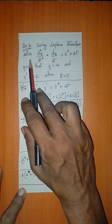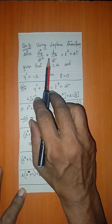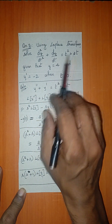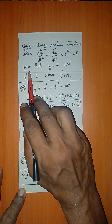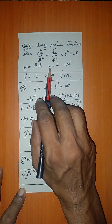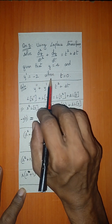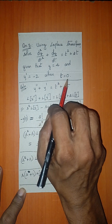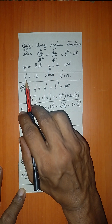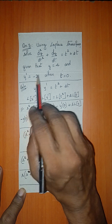Using Laplace transform, solve d²y/dt² + dy/dt = t² + 2t, given that y(0) = 4 and y'(0) = -2.